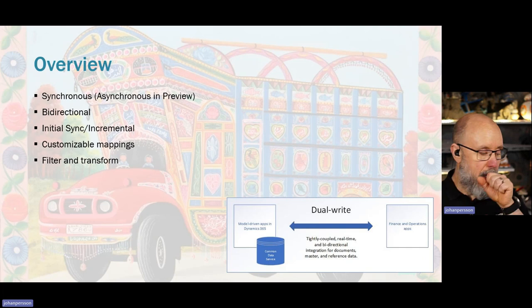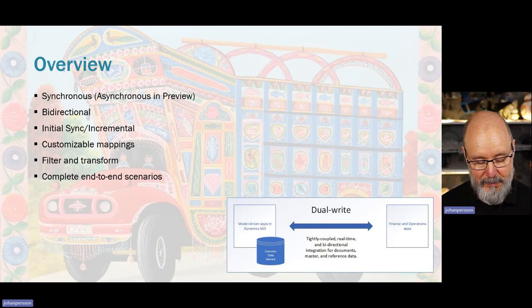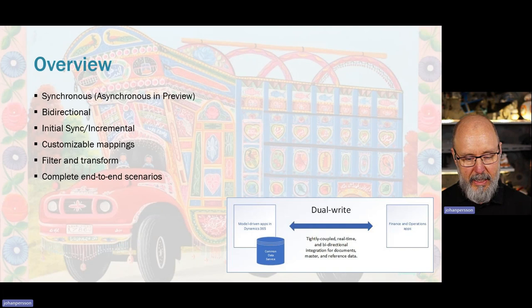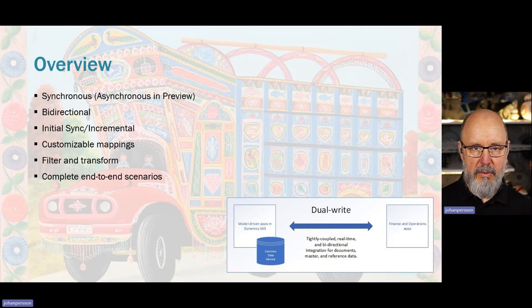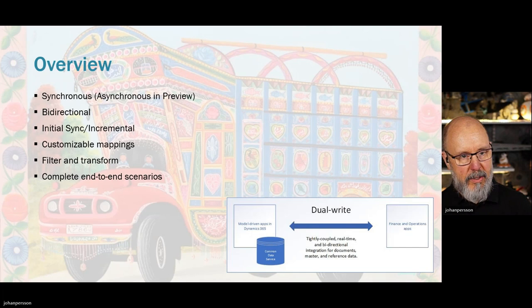We also have complete end-to-end scenarios — we can set up a complete prospect-to-cash scenario in Dual Write, meaning we have syncs from FNO to CE, from CE to FNO, and back and forth in multiple steps implementing an entire business process. This gives us the option to set up the complete business process, but it also gives us a reason to adhere to Microsoft standard business processes if they're already implemented.